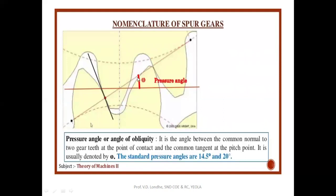The pressure angle is measured as the angle between the common normal drawn at the point of contact of the two teeth and the common tangent at the pitch point. The line drawn tangent to the pitch circle at the pitch point and the line perpendicular to the point of contact of the two teeth form this angle. The standard pressure angle value is approximately 14.5 degrees to 20 degrees.